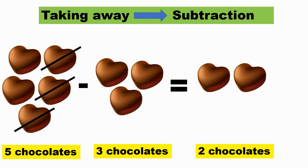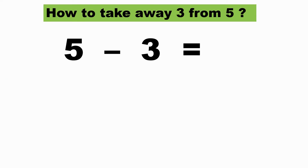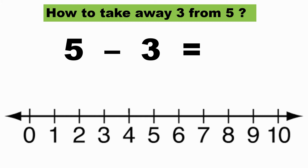Now suppose instead of these chocolates I had these numbers. So what is five minus three? What do I get if I subtract three from five? I don't have any chocolates to remove, so how do I perform this subtraction? I can do it using a number line.